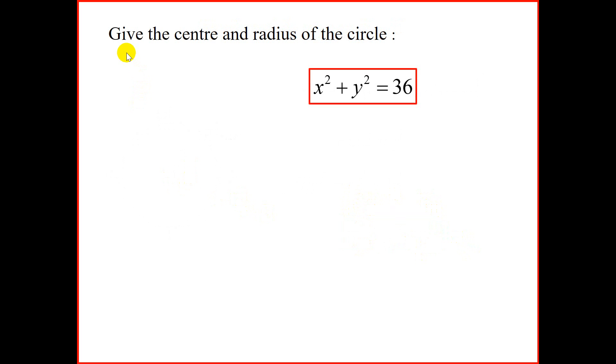There's our first question. Give the center and radius of the circle. Now we have the form x² + y² = r². Immediately, we can conclude that the center is (0, 0). Now we know that 36 is represented for r². So to find the radius, we will find the square root of 36, giving us 6.